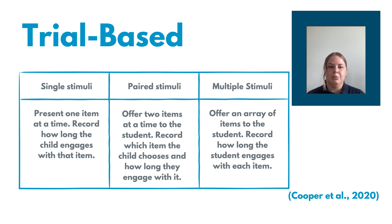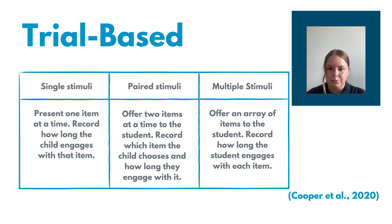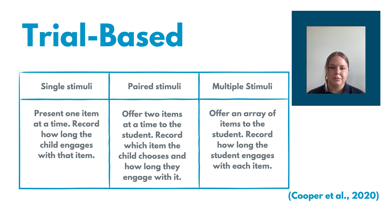For single stimuli, we're going to present one item at a time and record how long the child engages with that item. So instead of the free operant where we're sitting back watching what they engage with, we're going to bring the stimuli and present one item at a time. So maybe we present the balloon, record how long they engage with that, then the car, then the slime, then some blocks, and record how long they engage with each item to start identifying preferences.